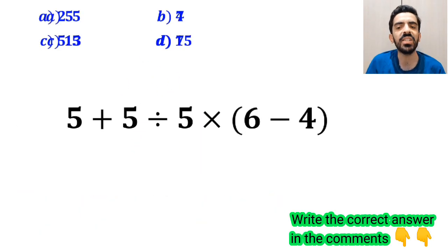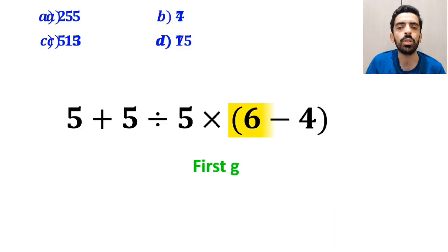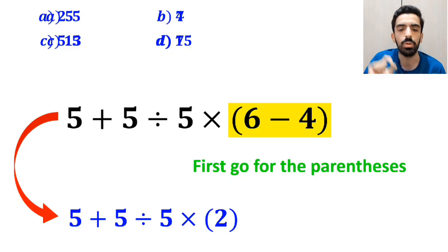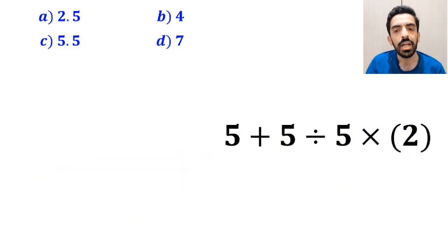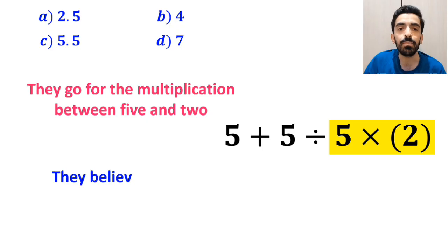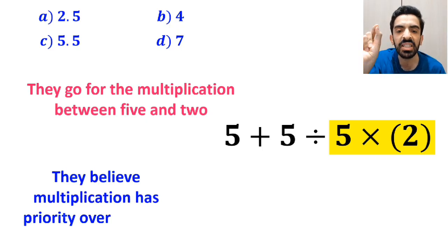Also, some other people, when solving this question, first go for the parenthesis, and write this expression as 5 plus 5 divided by 5 times 2. In the next step, they go for the multiplication between 5 and 2, because they believe multiplication has priority over division.